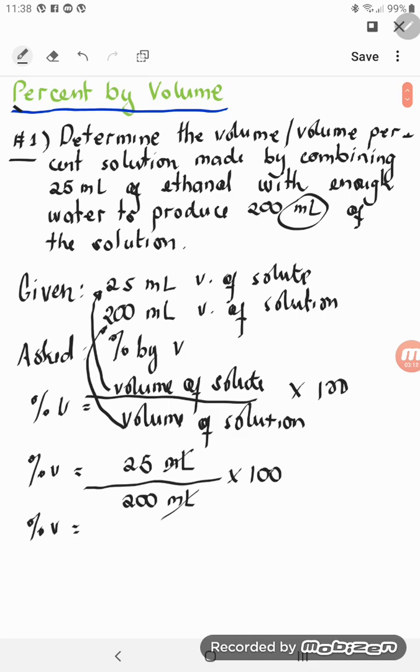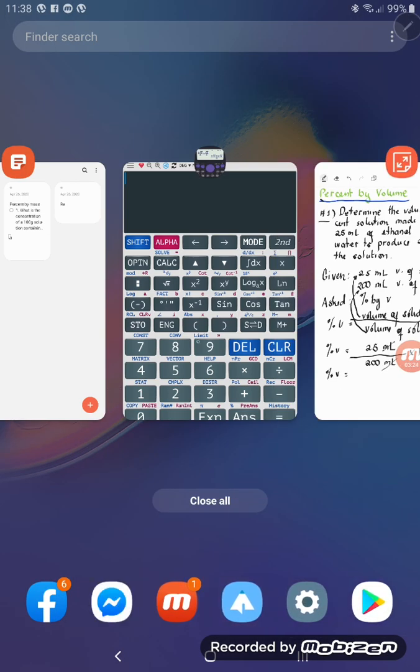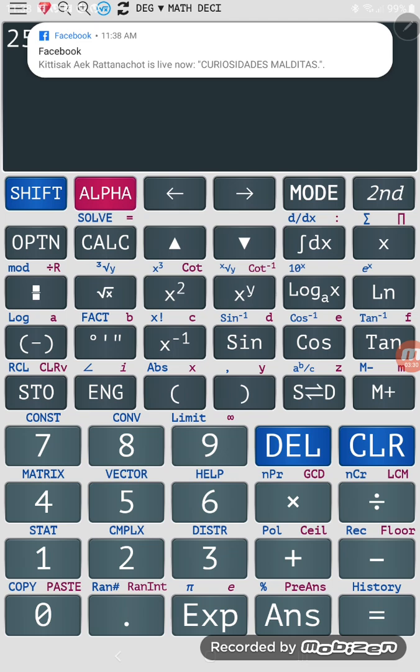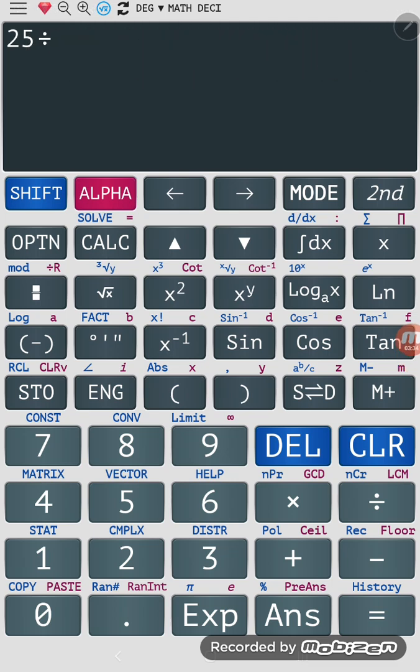If you think you can calculate mentally you may, but if you cannot, then you can use your calculator. In our case, I'll be using this calculator. I'm going to input 25 divided by 200 is equal to 0.125.